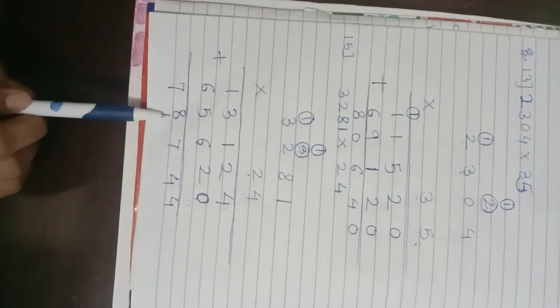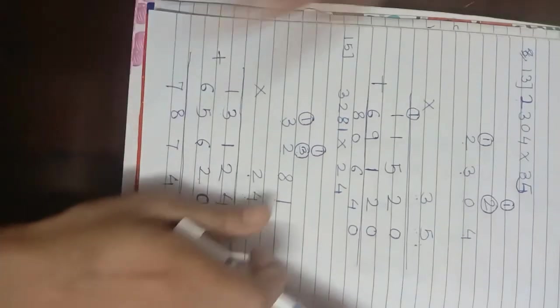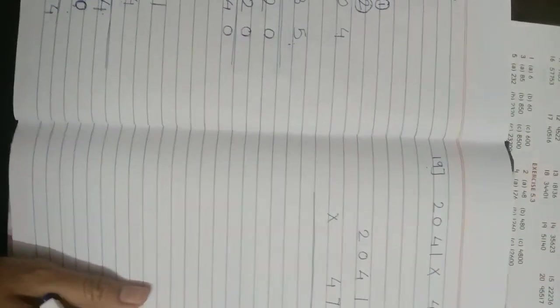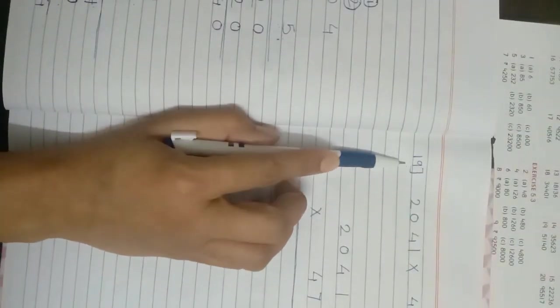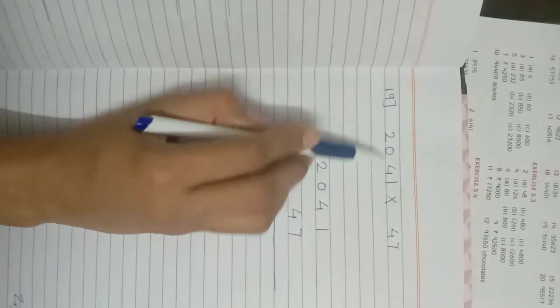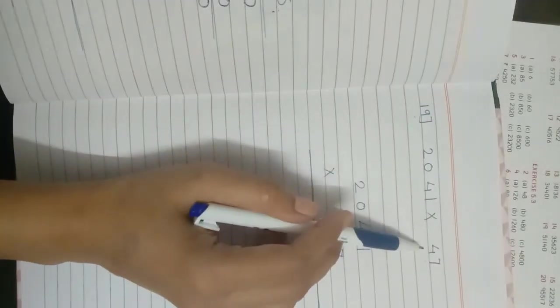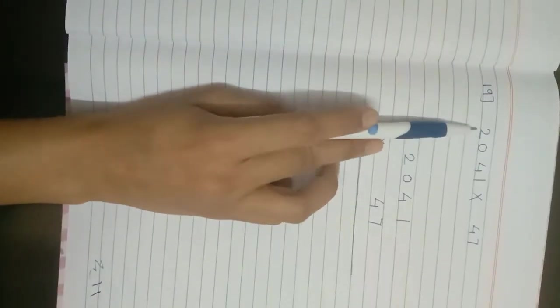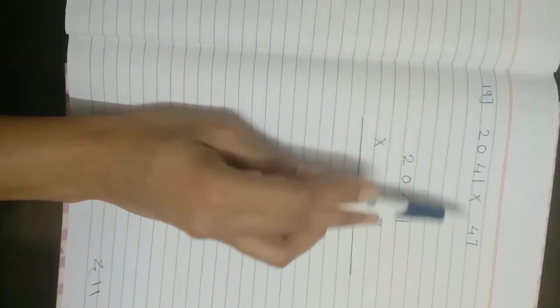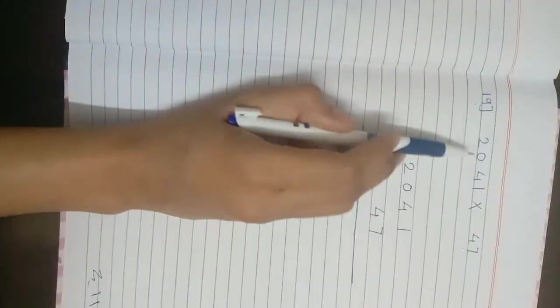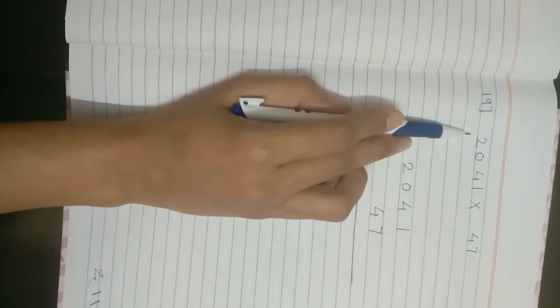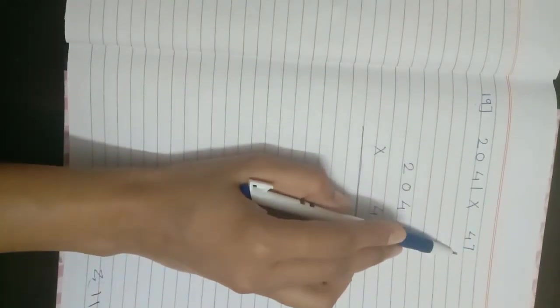The answer for question 15 is 78,744. Now question number 19 from Exercise 5.4: here we have to multiply 2041 by 47. So 2041 is the multiplicand and 47 is the multiplier.